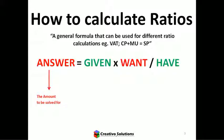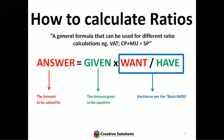The answer refers to the amount you're looking for. The given is what's provided in the question. The want is a ratio in relation to what you have — the want goes with the answer and the have goes with what's given. That creates a ratio: a fraction, numerator over denominator. I call that the basic ratio.